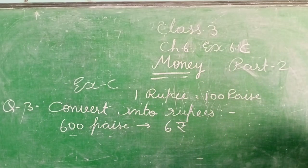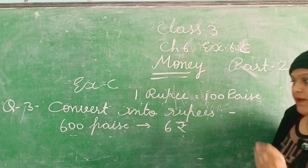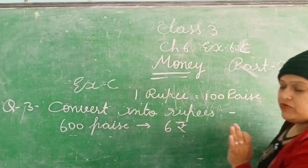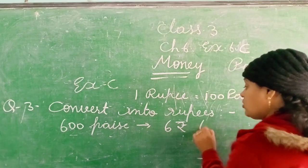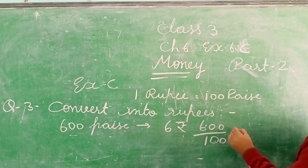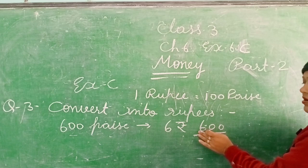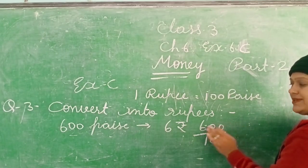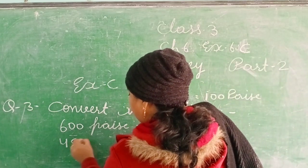Next: 450 paise. Aap zeros remove karo, ya aap 100 se divide kar sakte ho. Decimal lagao — decimal se pehle ka jo number hai wo rupees hota hai, aur decimal ke baad ka number paise. 450 paise converted is 4.50 rupees.